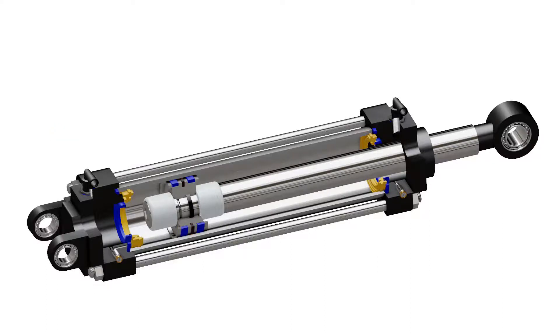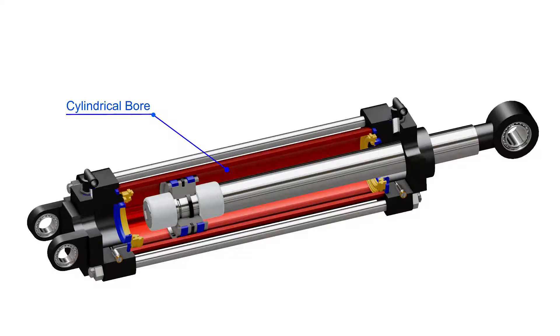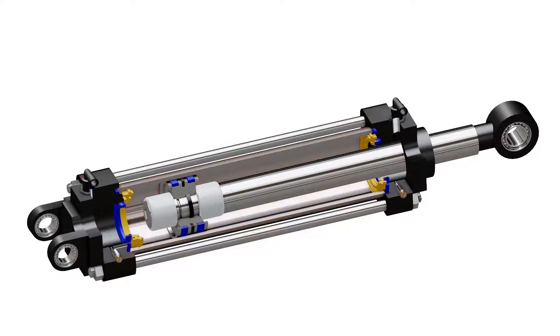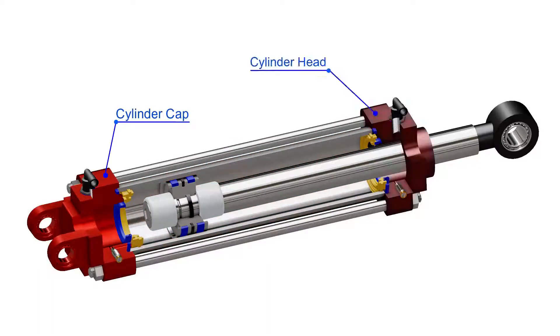This whole assembly then goes into a cylindrical bore. This cylinder is generally made up of aluminium or steel. A cylinder cap encloses the cylinder chamber at one end, and the cylinder head encloses the chamber from the other end.